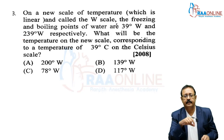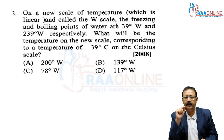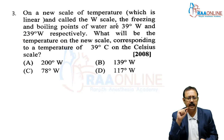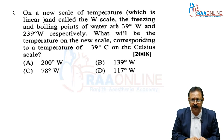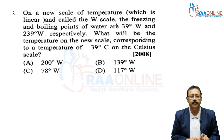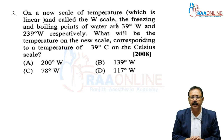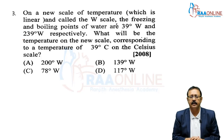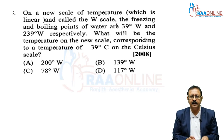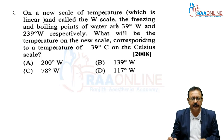Next problem: on a new scale of temperature, which is linear and called the W scale, the freezing and boiling points of water are 39 degrees W and 239 degrees W. What will be the temperature on the new scale corresponding to a temperature of 39 degrees Celsius? This is very easy.